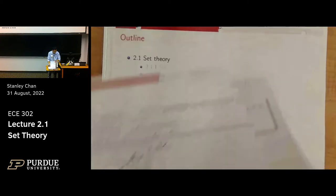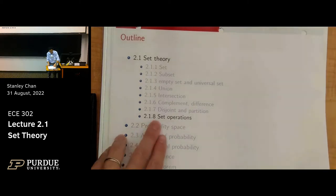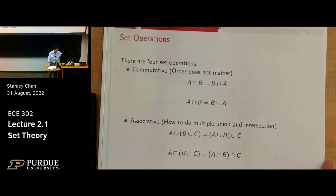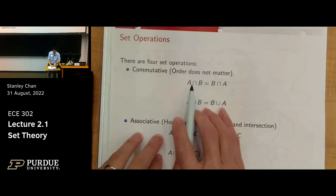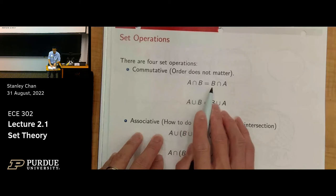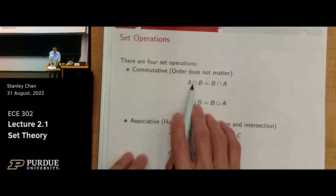So that's disjoint and partition. Now let's move on to set operations — section 2.1.8. There are a few very important set operations to learn. Here is one: A union B is the same as B union A — pretty obvious, like addition where one plus two equals two plus one.